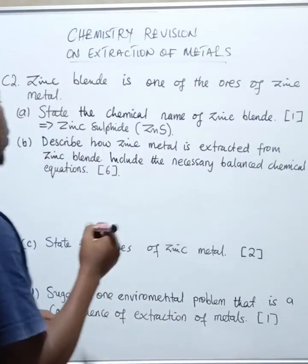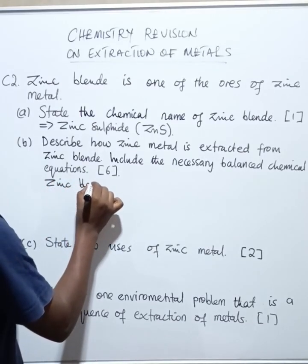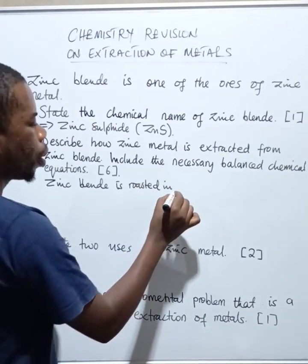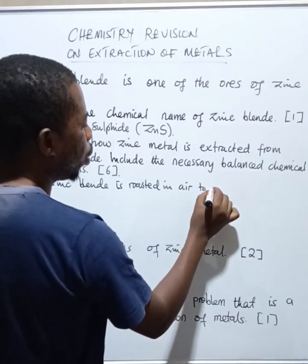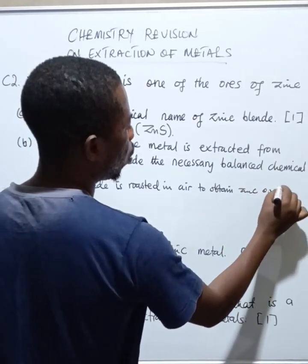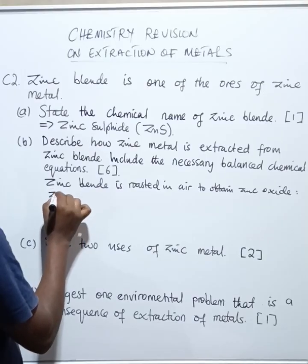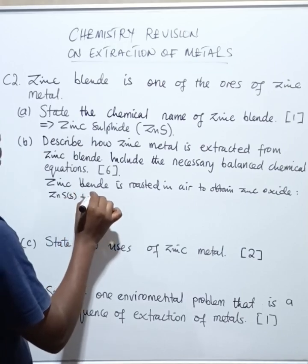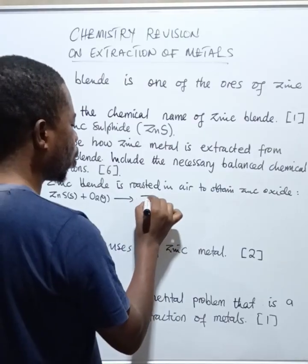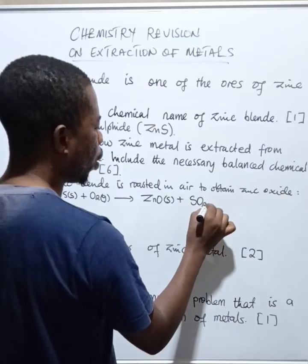The first thing we will say is that zinc blende is roasted in air to obtain zinc oxide. We will show the equation: zinc sulfide (ZnS) solid is roasted and we get zinc oxide (ZnO) solid plus sulfur dioxide (SO₂) gas.